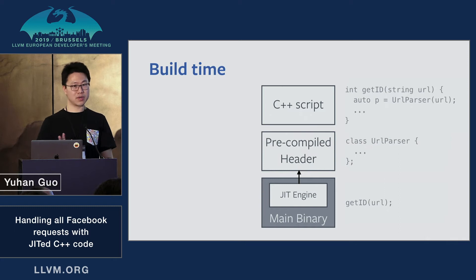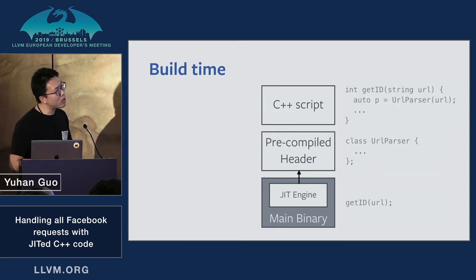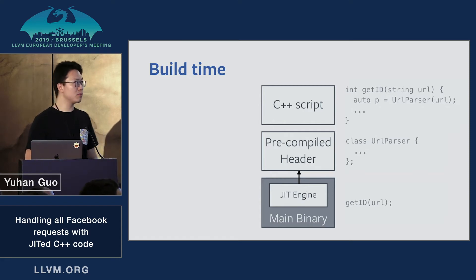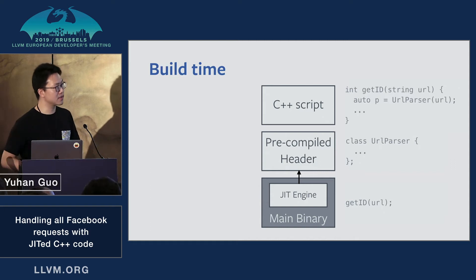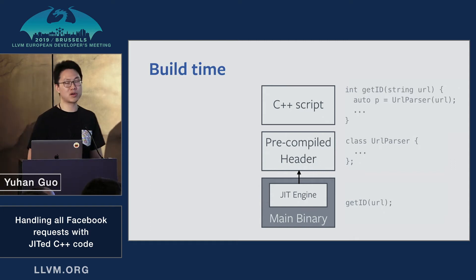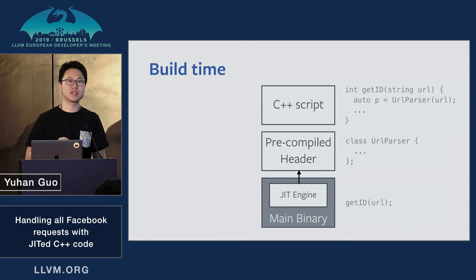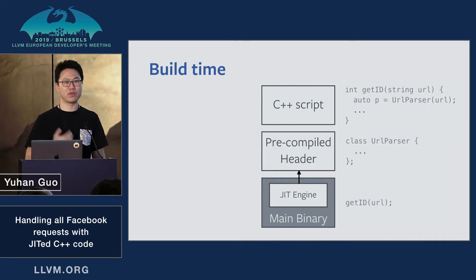That's the concept in a nutshell. When you look at the code, you might ask: where does the URL parser in the script come from? At build time, when we built the main binary, we also built all the dependencies into a Clang pre-compiled header (PCH) that contains things like class definitions and declarations of the URL parser. The JIT engine is able to stitch all the pieces together and produce the final executable. These three pieces — the main binary, the PCH, and the C++ script — are the foundation of what we have today for the scripting engine.